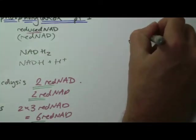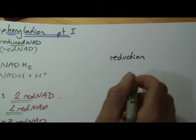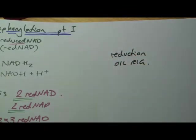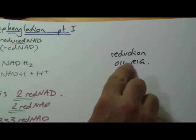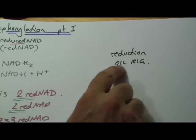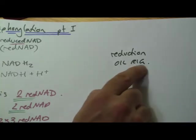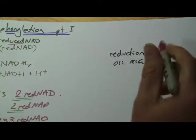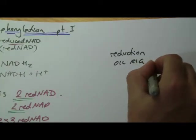I wanted to also impress the importance of these terms reduction and oxidation. There are a couple of ways you can think of reduction. The oil rig one you probably learned is oxidation is loss, reduction is gain. If you lose electrons from something, you've become oxidized. If you gain electrons, you've become reduced. So one way you can think of reduction is gaining electrons.